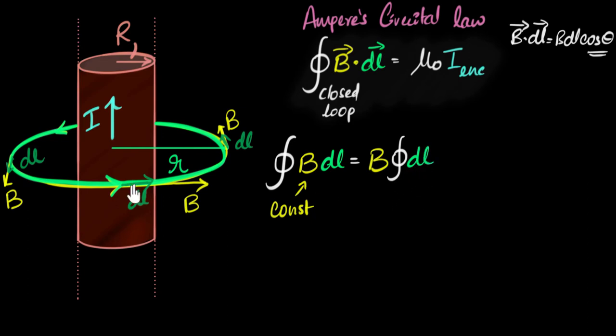Now what is integral of dl? Well logically integrating dl means adding up all these pieces, tiny tiny pieces of dl, adding all of them up, tiny lengths. What happens when you add all these tiny lengths? You get the total length. Right? And do we know what the total length of this loop is?